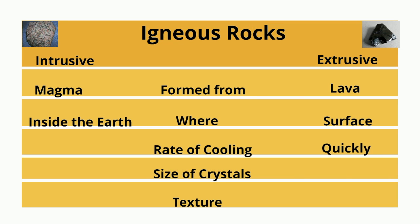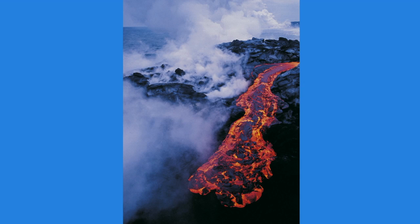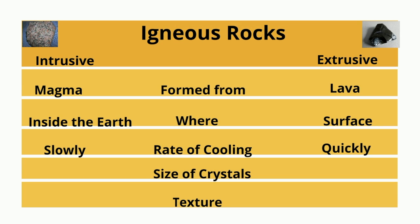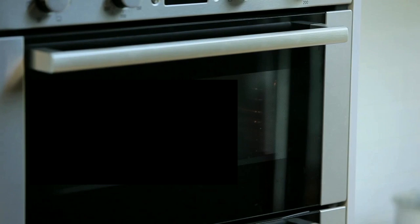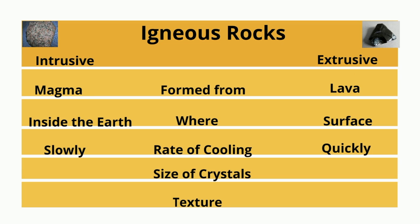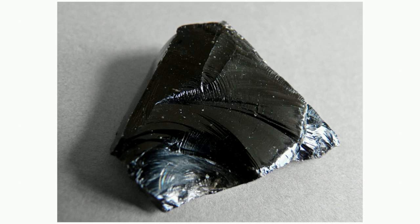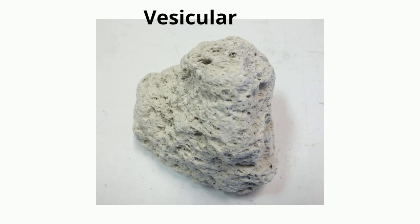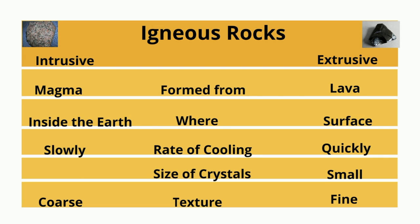Extrusive rocks cool quickly. Intrusive rocks cool slowly — they are inside the earth, which acts a little bit like an oven, slowing the rate of cooling. Extrusive rocks may have really small crystals smaller than one millimeter, or no crystals at all. Sometimes they may be vesicular, which means the rock may have air bubbles. Intrusive rocks have crystals larger than one millimeter.